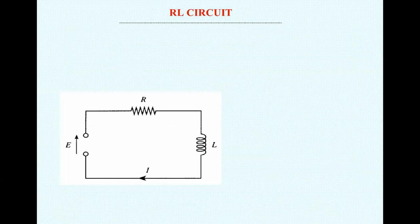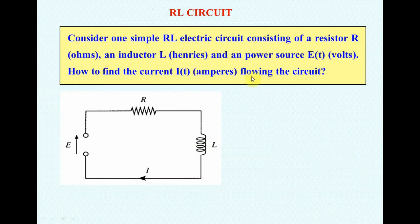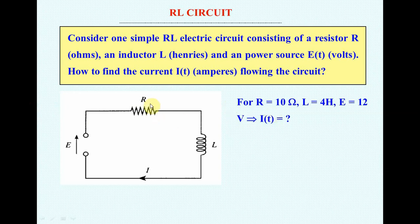We meet a lot of situations in real life. For example, the circuit with the resistor R and the inductor L, the source E and current I. How you can find current I flowing in that circuit? For this, for example, if you have resistor 10 ohms and the power source 12 volts, how you find the current?